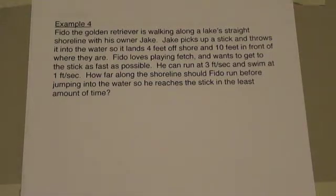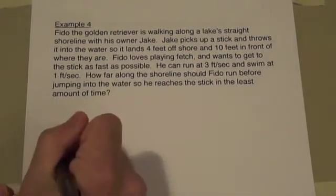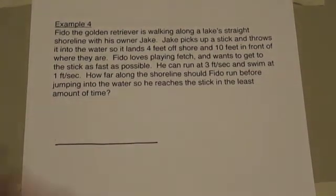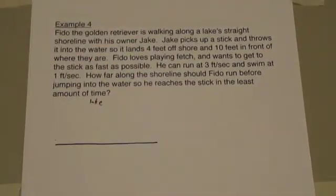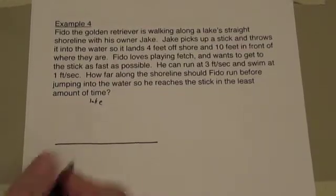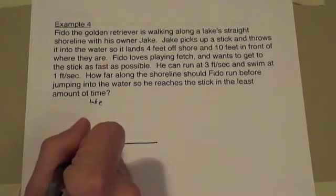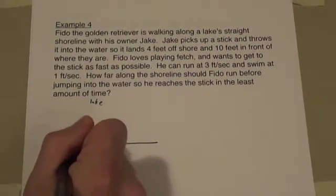Now this is an example of a problem that would be nearly impossible to do without drawing the picture. So let's definitely be sure to draw a picture of this problem and label it with variables. Here we go. So let's pretend that this is the lake, all this area here. And it's a straight shoreline. So you have a guy and his dog walking. Here we only care about the dog so that's what I'm going to draw. Doesn't really look like a dog but you get the idea.